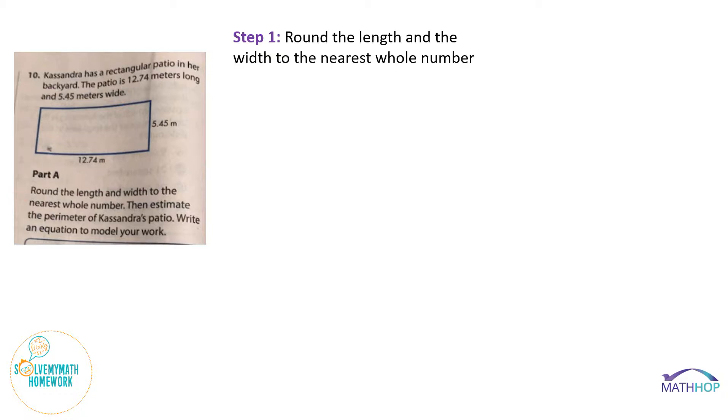Our first step is going to be to round the length and the width to the nearest whole number. So the width is 5.45 meters. The length is 12.74 meters. Remember when you are rounding, you have to look to the place value to the right of what you're rounding to. We're rounding to the whole number, which means we need to look one place to the right. So we need to look to the tenths place.